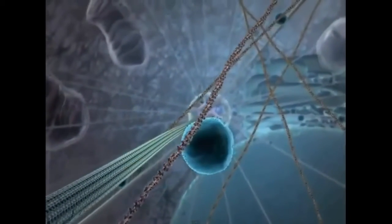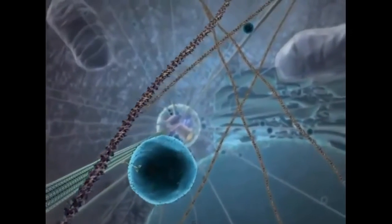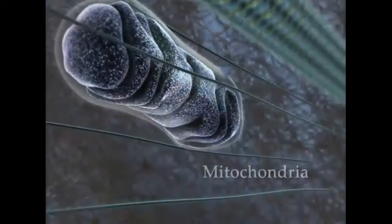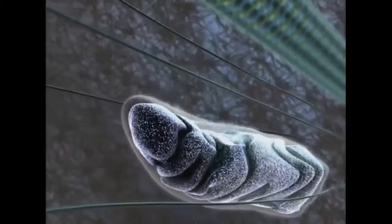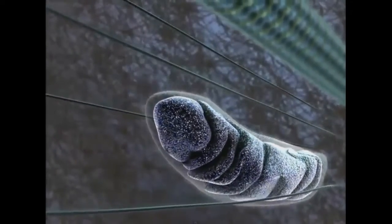Membrane-bound organelles like mitochondria are loosely trapped by the cytoskeleton. Mitochondria change shape continuously, and their orientation is partly dictated by their interaction with microtubules.